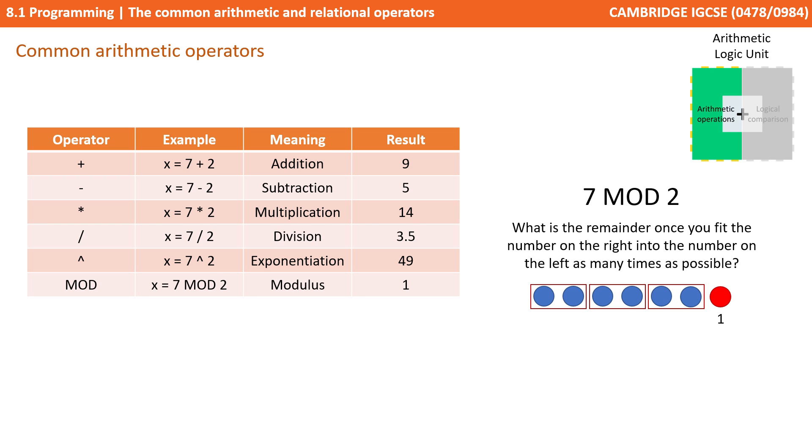So we can see here, the number on the right was 2. We fit that into the number on the left, 7, as many whole times as possible. Well, that's three times. And what we're left with, what remainder, is 1. So 7 mod 2 is 1.